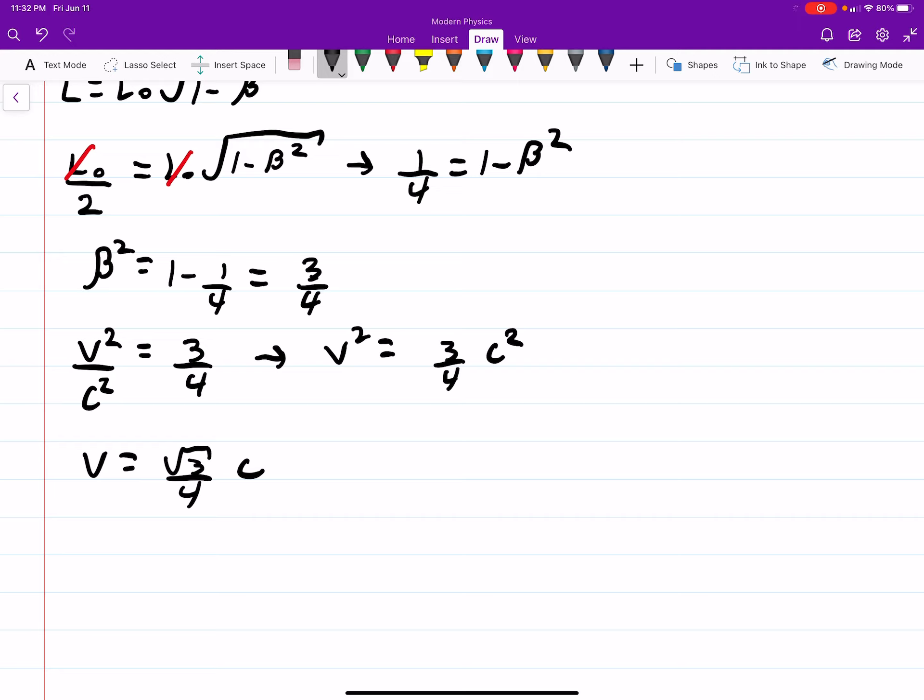and put it in a calculator, that's equal to 0.866C, or about 86%, 87% the speed of light.